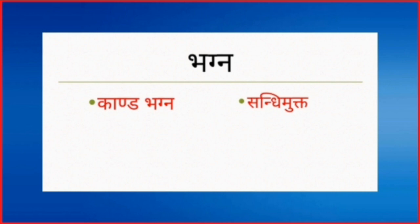Bhagna is divided into two types: Kanda Bhagna and Sandhimukta. Sandhimukta is six in number — remember the letter S, it is six in number. Double the number of types of Kanda Bhagna, that is 12 prakaras or types of Kanda Bhagna, which we are dealing in the coming slides.